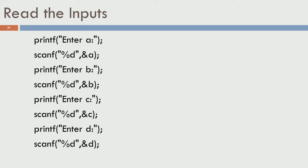Step 2 is reading the inputs. In this program, I have written it so that it will prompt the user for one coefficient at a time. There is printf 'enter a' and the user is expected to enter a number, which is read using scanf. Then you have printf 'enter b', and so on. All 4 coefficients are read — that is step 2.